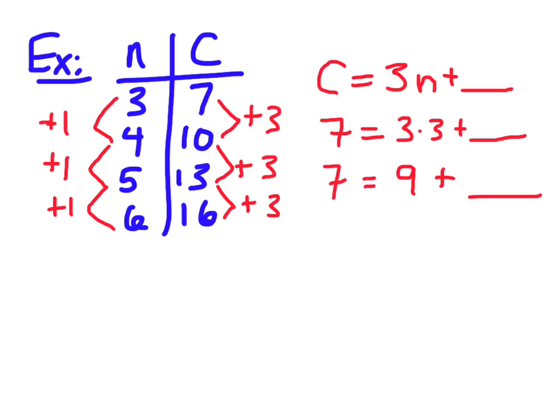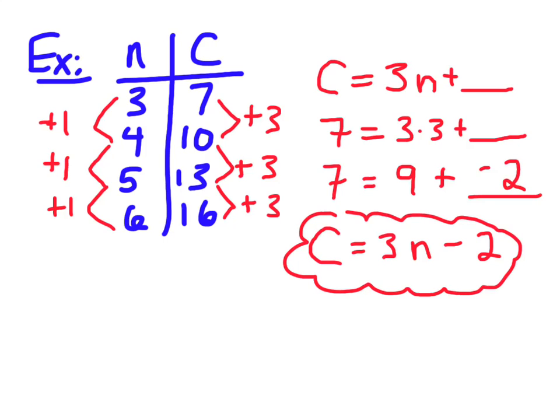So then I have seven is equal to nine plus blank. So if I need seven and I have nine, I need to take away two here, right? So subtract two. So my equation looks like this: C is equal to 3n subtract two. That's what you got for that one. So now we'd check it with another one. Let's see if five would work. So we go five times three is 15, subtract two is 13. So we're good to go.